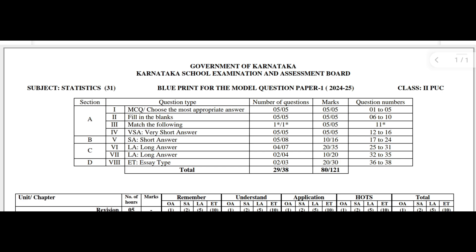Dear students, the Statistics annual exam question paper consists of four parts mainly. Those are known as sections: Section A, B, C, and D. Totally four sections are there.